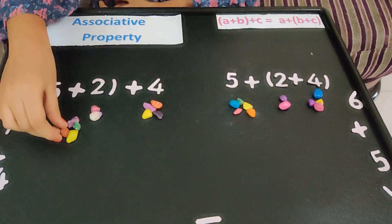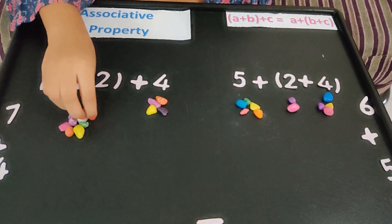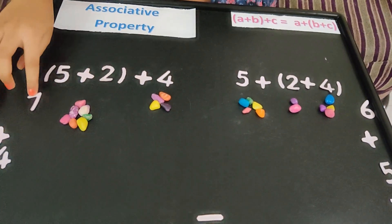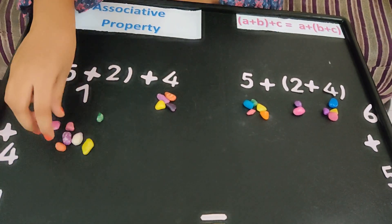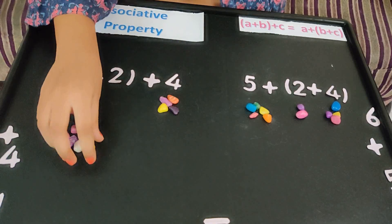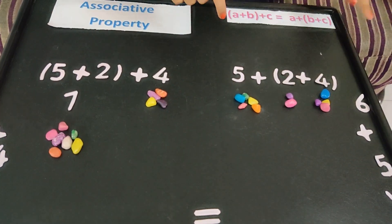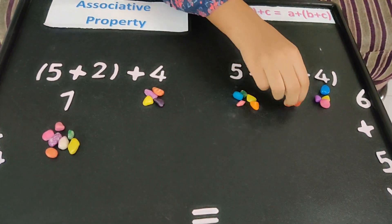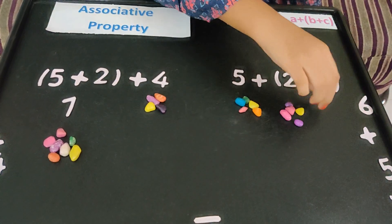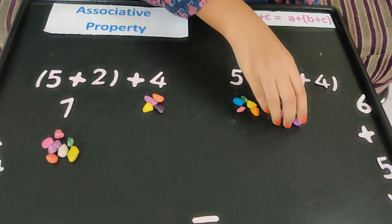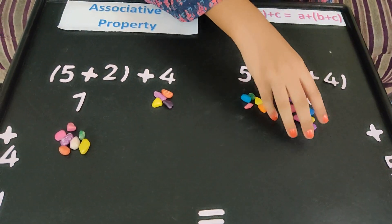Counting: 1, 2, 3, 4, 5, 6, 7. So 5 plus 2 is 7. Next, 2 plus 4: 1, 2, 3, 4, 5, 6. So 2 plus 4 is 6.